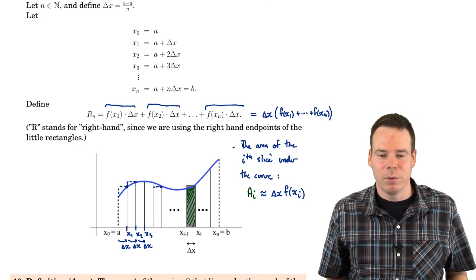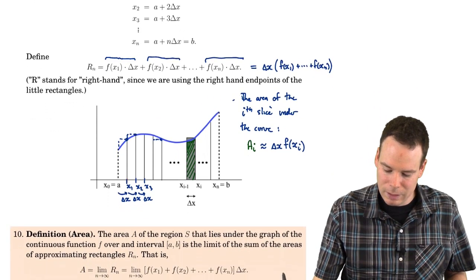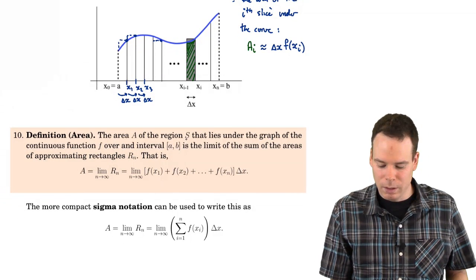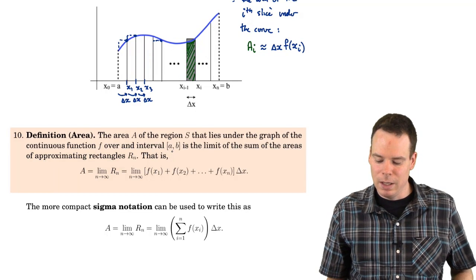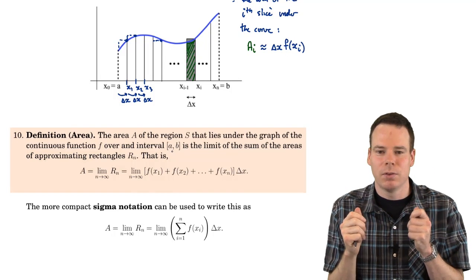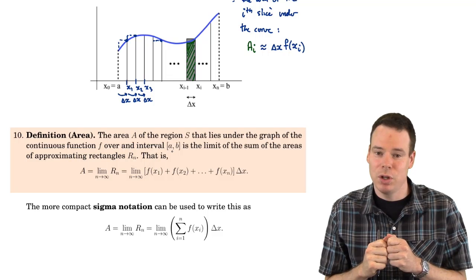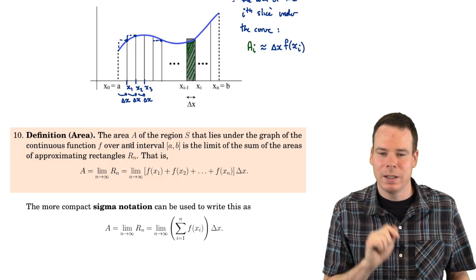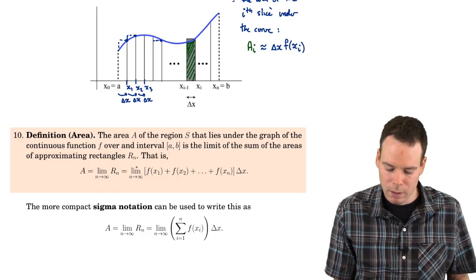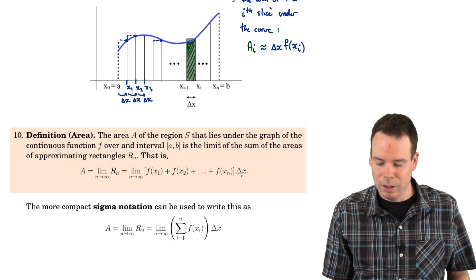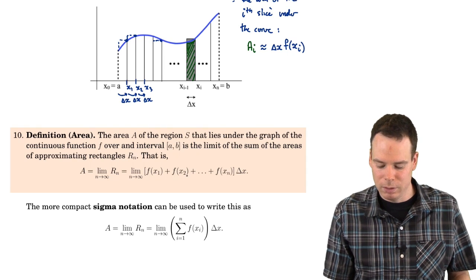Now we're ready to define what we mean by area. The area of the region S that lies under the graph of a continuous function over an interval [a, b] is the limit of the sums of the areas of the approximating rectangles. We're using the area of the rectangle as the basis for what we're defining area to be in general — area is defined to be this limiting process of approximating with rectangles and refining the approximations by taking the number of rectangles to infinity.